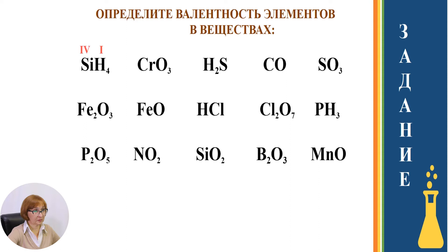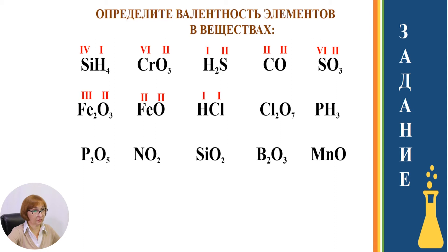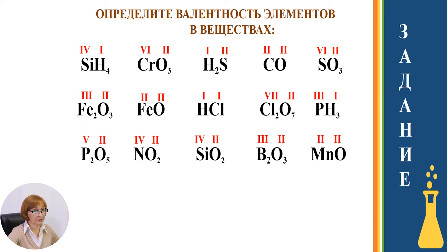Итак, проверим. SiH4: валентности 4, 1. CrO3: 6, 2. H2S: 1, 2. CO: валентности 2, 2. SO3: валентность серы 6, у кислорода 2. Fe2O3: 3, 2. FeO: 2, 2. HCl: 1, 1. Cl2O7: валентности 7, 2. PH3: 3, 1. P2O5: 5, 2. NO2: валентность азота 4, у кислорода 2. SiO2: 4, 2. B2O3: 3, 2. MnO: 2, 2.